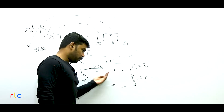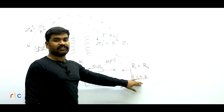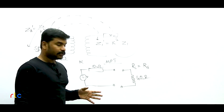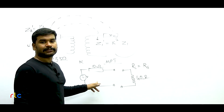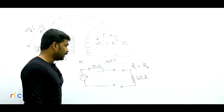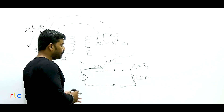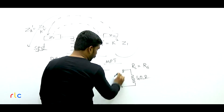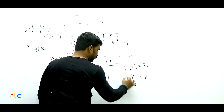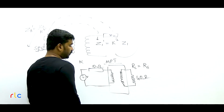Now when the source looks at the load through the transformer, the transformer electrically isolates source and load. The source can only see up to the primary of the transformer. So we transform the 40-ohm secondary load to the primary side: Z2 dash = Z2 / K² = 40 / 4 = 10 ohms. Now the source sees a 10-ohm load — equal to its own impedance — so maximum power transfer occurs.